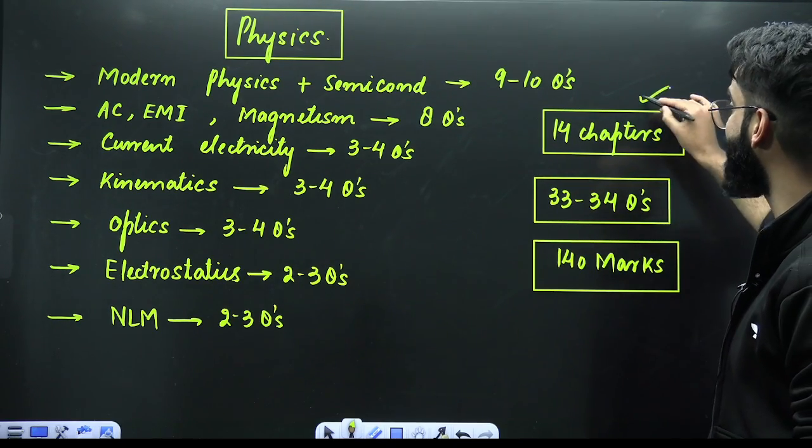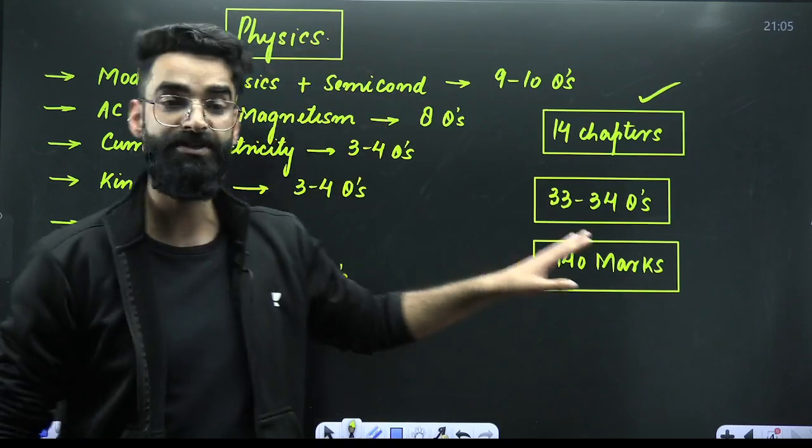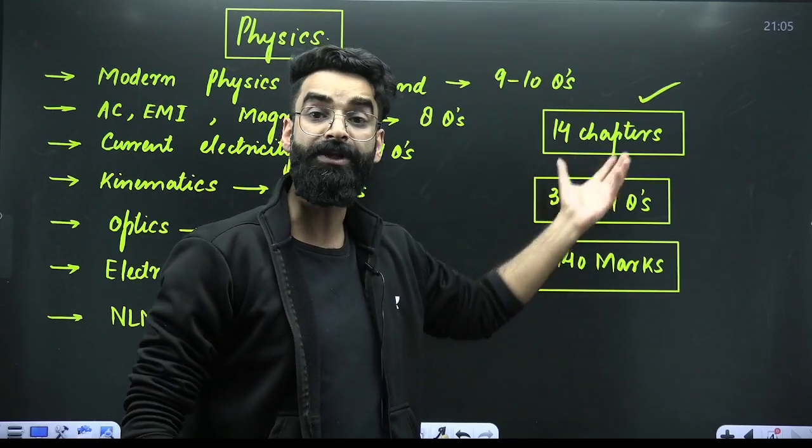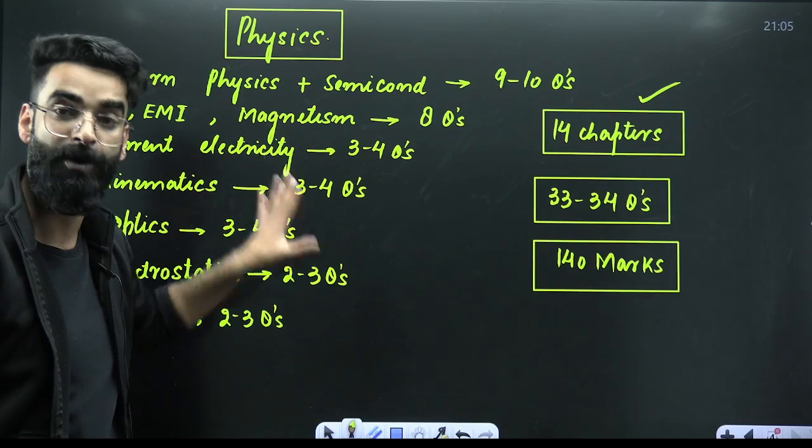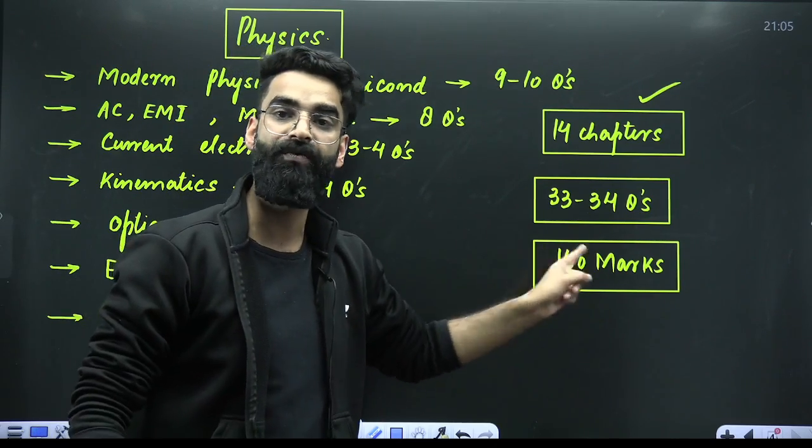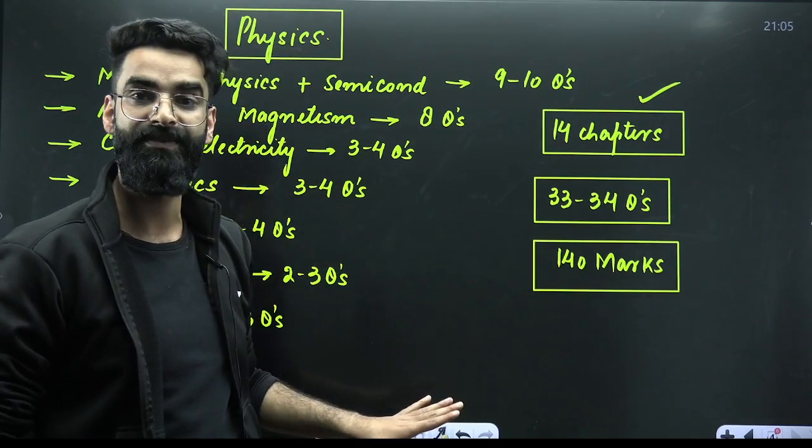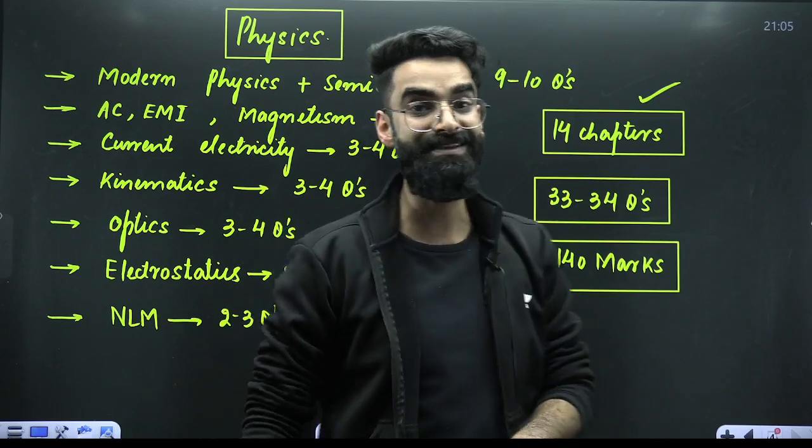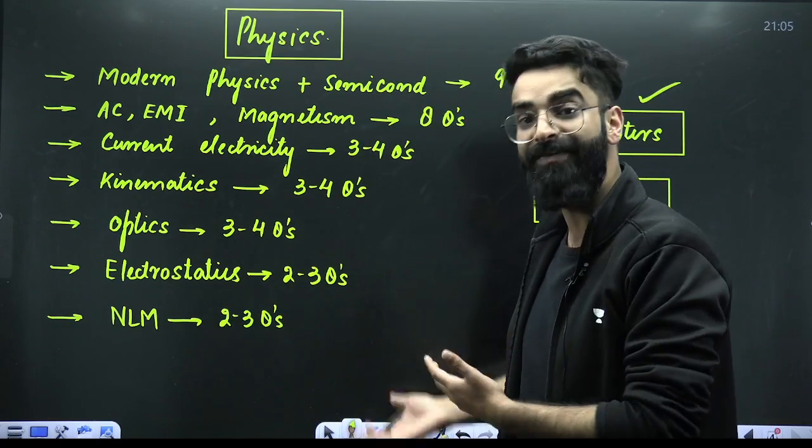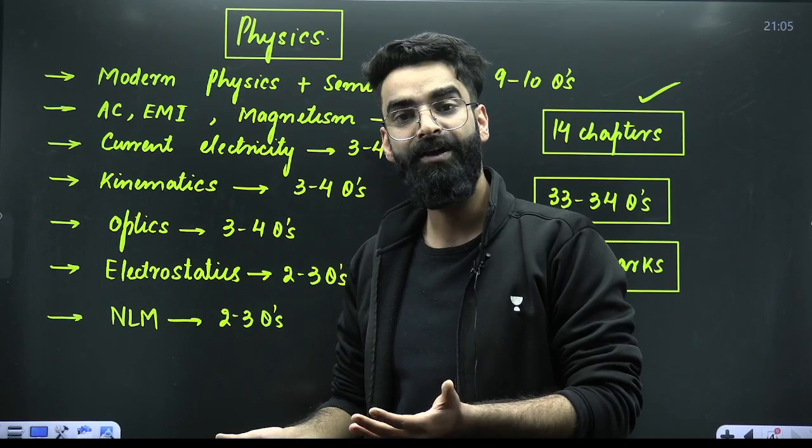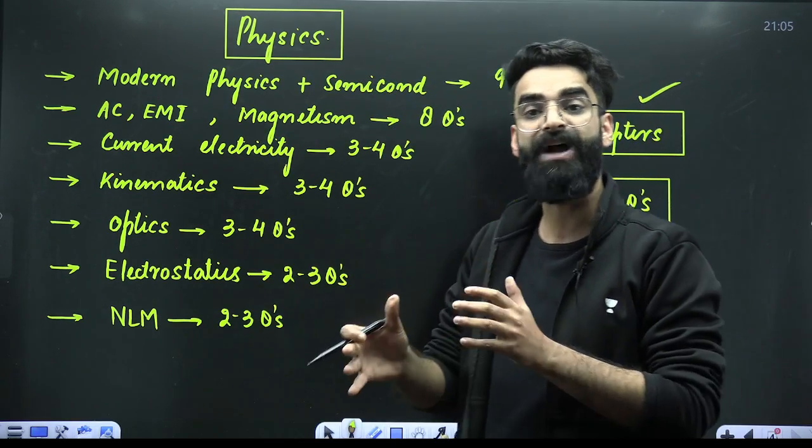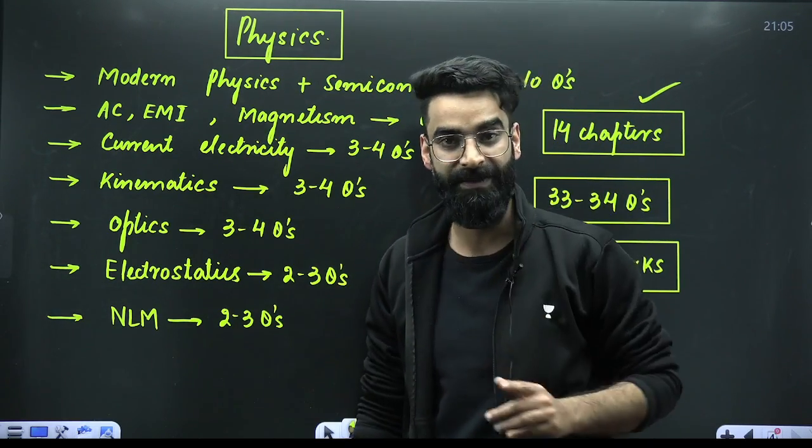So in total, again, these are some 14 chapters. And from these 14 chapters, you can expect some 33 to 34 questions. And my dear students, if you are doing these chapters on priority, that means you are fetching 140 from these chapters itself. This is the data which I am giving you. This is the most expected data telling you exactly from which chapter how many questions are exactly expected.